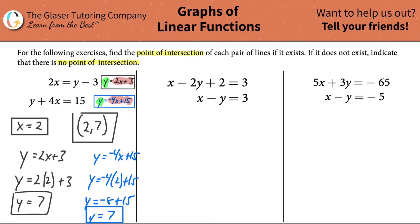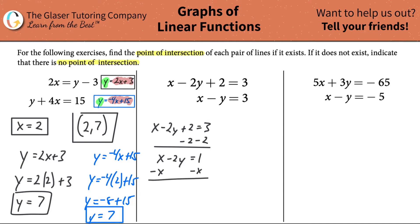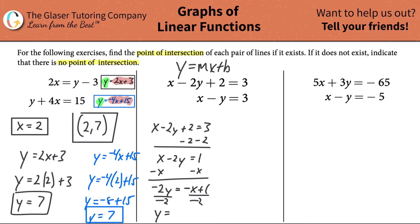Now let's apply this to the second example quickly. Starting with x - 2y + 2 = 3, I combine like terms and subtract 2 from the right to get x - 2y = 1. Bringing x to the right gives -2y = -x + 1, then dividing both sides by -2 yields y = (1/2)x - (1/2).